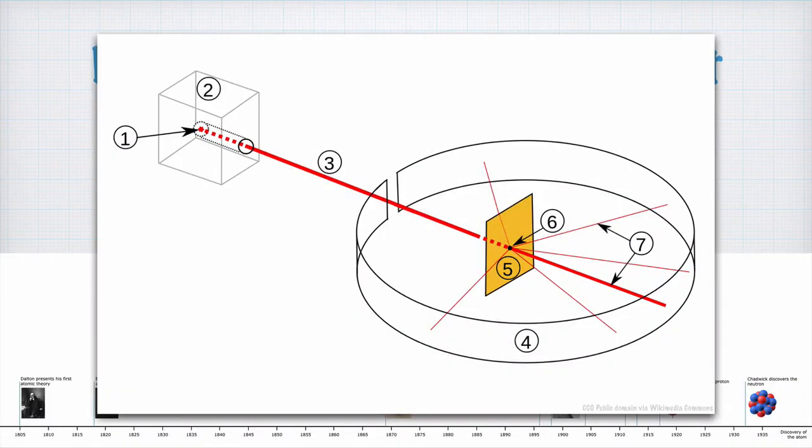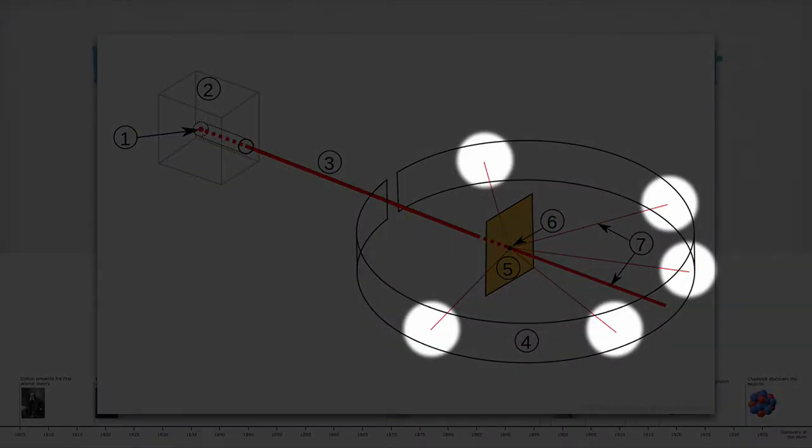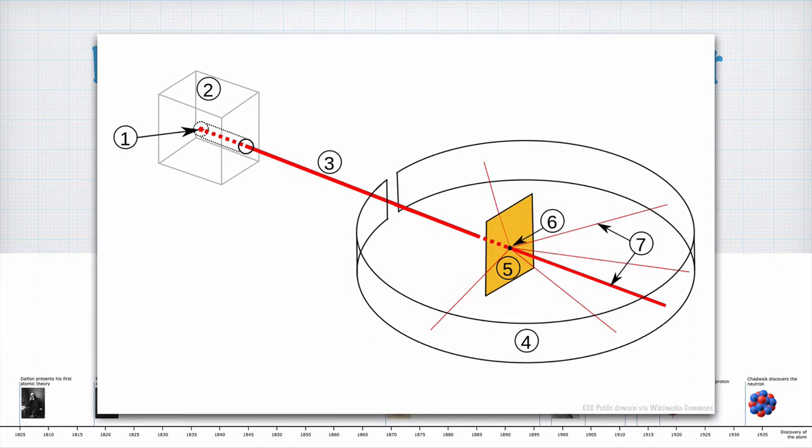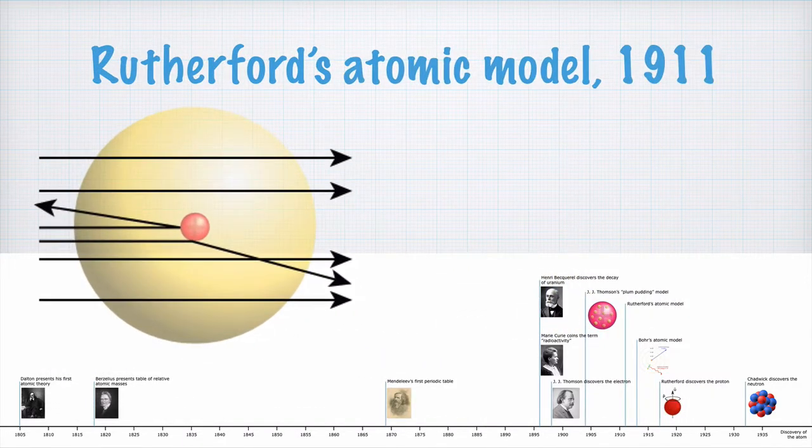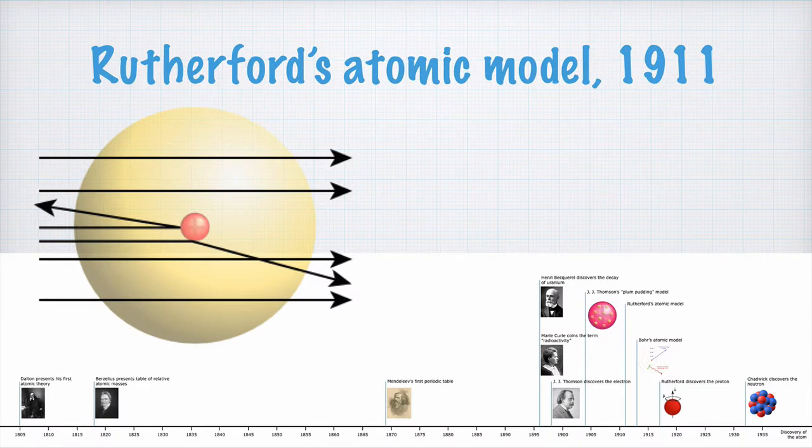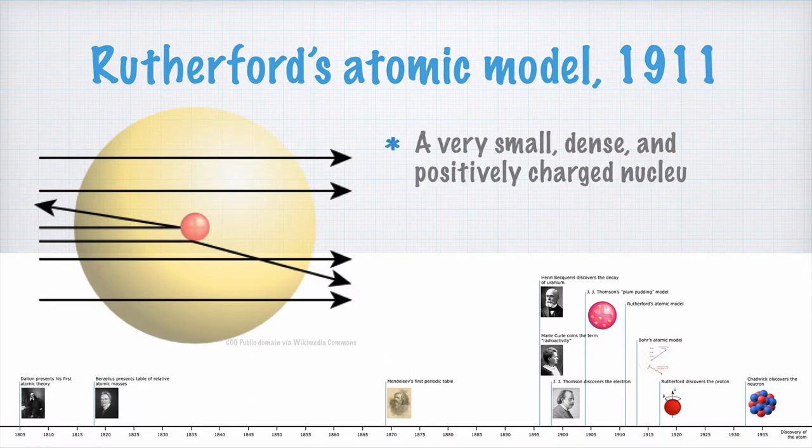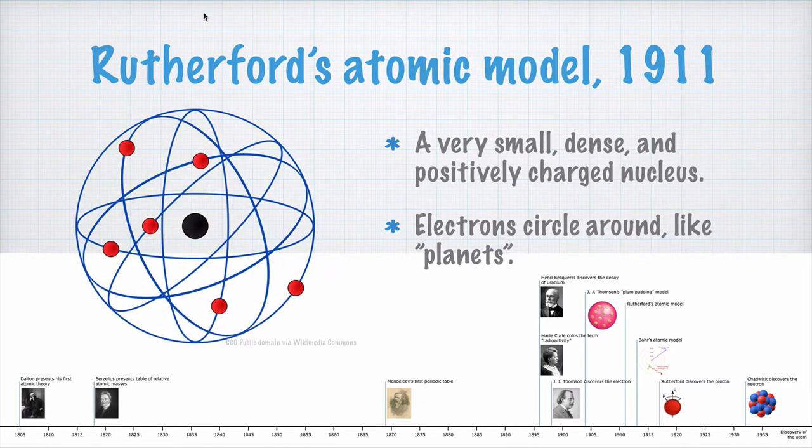But, about 1 in 8000 particles bounced off in a completely different direction. This could only be explained if the atom was instead mostly void, and almost all of its mass concentrated in a solid kernel, the atomic nucleus. This is because it was the nucleus that made the alpha particles bounce off. The nucleus is positively charged, and Rutherford proposed that the electrons circle around the nucleus more or less like the planets circle around the sun.